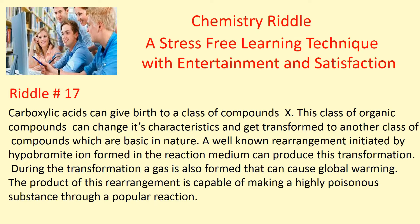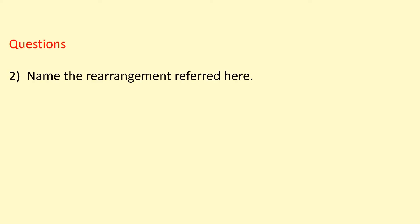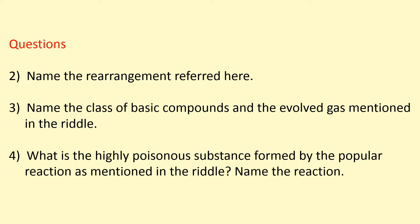Now let's see the questions. The primary question is: name the class of the compounds to which X belongs. The answer is acid amide, which is the derivative of carboxylic acid. Question number 2: name the rearrangement referred here. Question number 3: name the class of basic compounds and the evolved gas mentioned in the riddle. Question number 4: what is the highly poisonous substance formed by the popular reaction as mentioned in the riddle, and name the reaction?